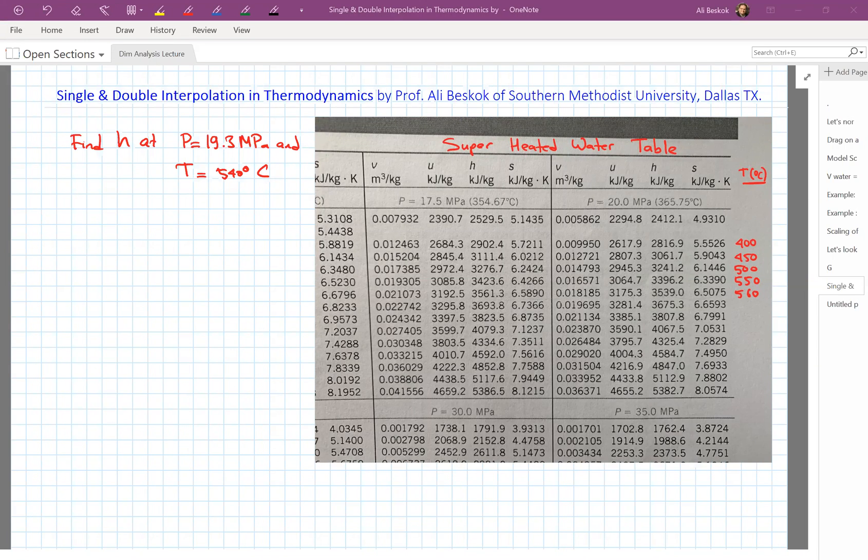Hello, everybody. My name is Ali Beshkirk. I'm a professor at Southern Methodist University in Dallas, Texas. It's been brought to my attention that students are having difficulties understanding how to do interpolation in thermodynamics from the thermal tables, and especially double interpolation seems to be a problem.